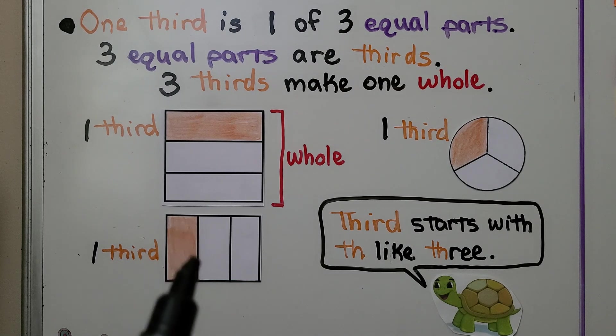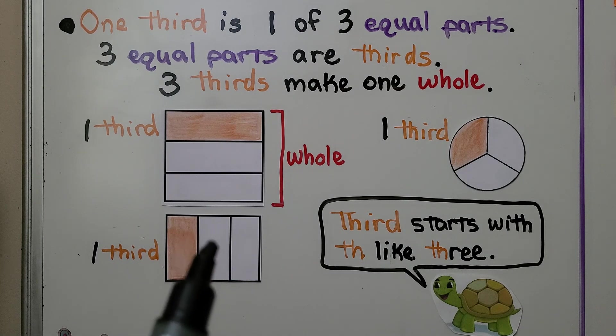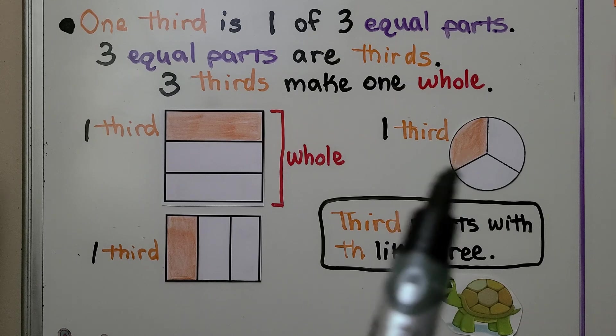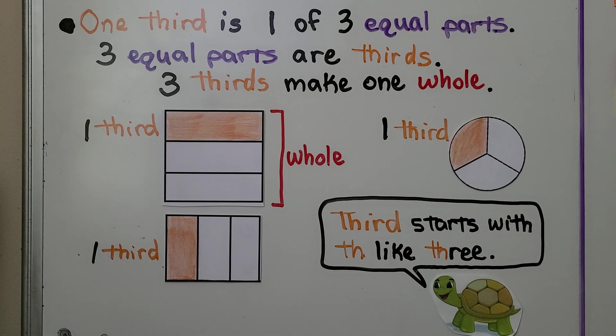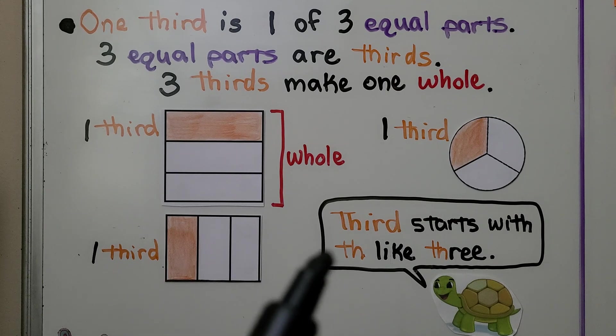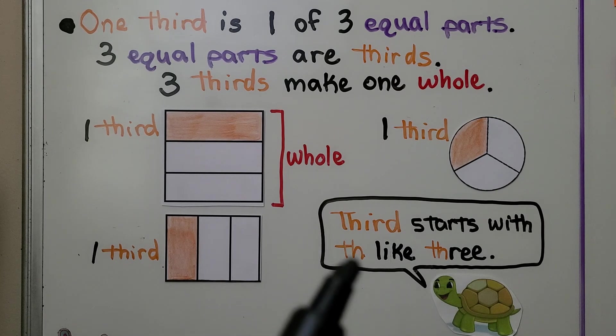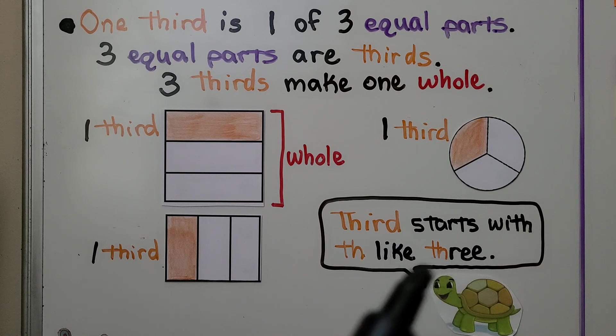You can even go this way. This is one third, that's one third, that's one third. We could even have one third of a circle. And you can remember, a third is one of three parts, because third starts with th, like the word three.